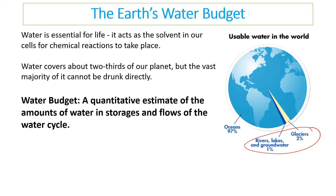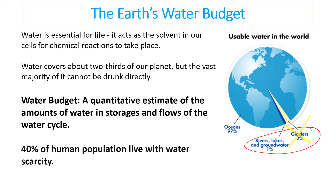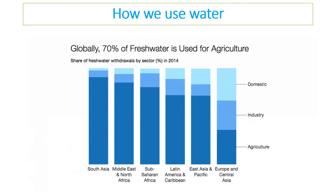As previously said, only about three percent of the water is available to drink as fresh water, because 97% is salt water, and actually two percent of that is locked away in glaciers. So there's less than one percent of water on the planet available for us to drink, and 40 percent of human populations live within water scarcity, meaning they don't have an adequate supply of fresh water.